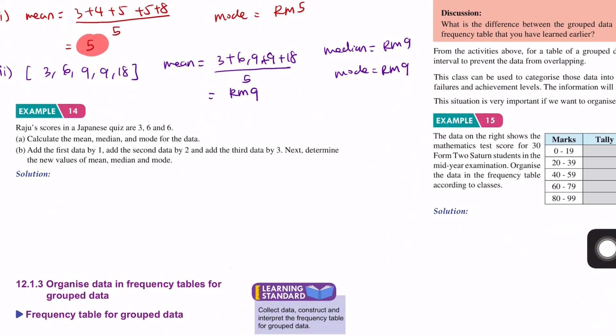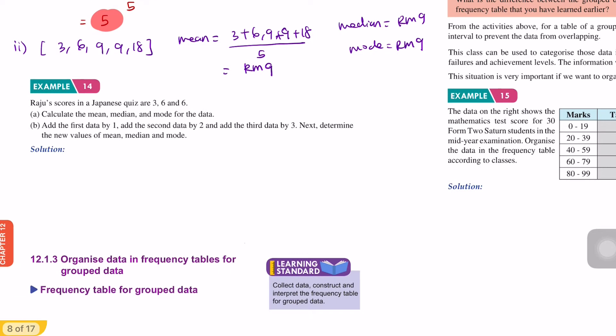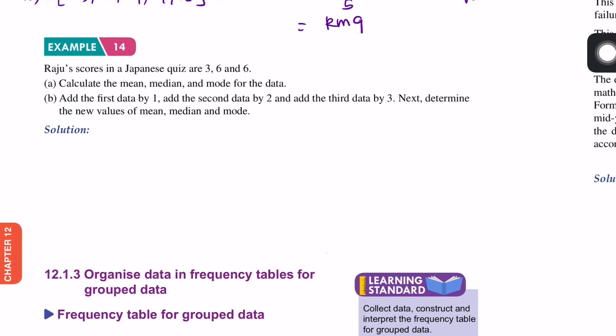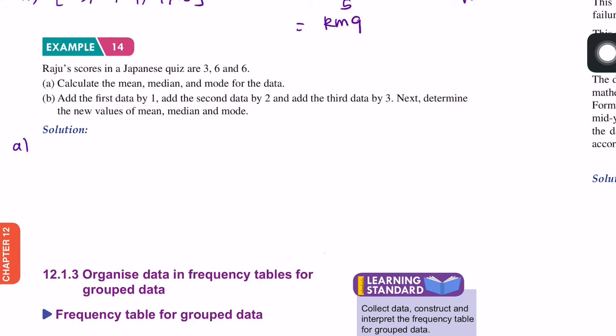Next, Example 14. Raju's scores in a Japanese quiz are 3, 6, and 6. For the original data, the mean is 3 plus 6 plus 6 divided by 3, which equals 5. The median is 6 because 6 is in the middle. The mode is 6 because 6 appears most frequently.